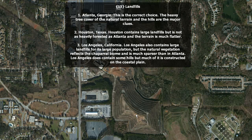Landfills. I've got you zoomed in at a large scale here, so this is a difficult one. Atlanta, Georgia is the correct choice. The heavy tree cover of the natural terrain and the hills are the major clues. Houston contains large landfills, it is true, but it is not as heavily forested as Atlanta and the terrain is much flatter, being on the Gulf Coastal Plain. Los Angeles also contains large landfills for its large population, but the natural vegetation reflects the chaparral biome and it's much sparser than Atlanta. Los Angeles does contain some hills, but much of it is constructed on the coastal plain.